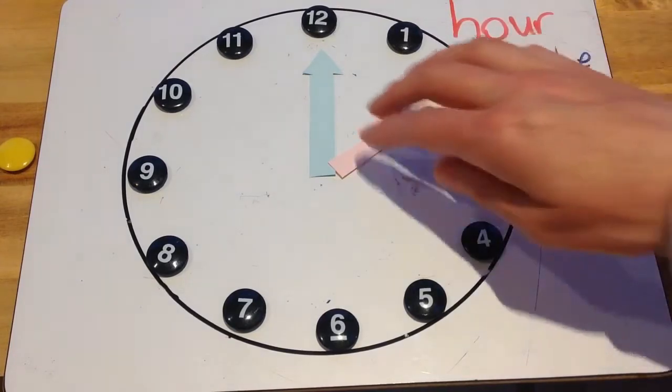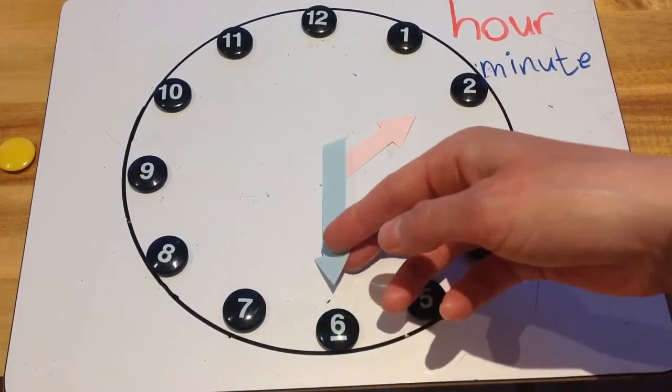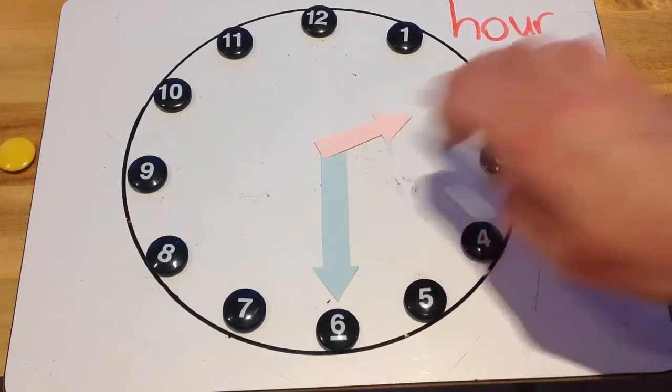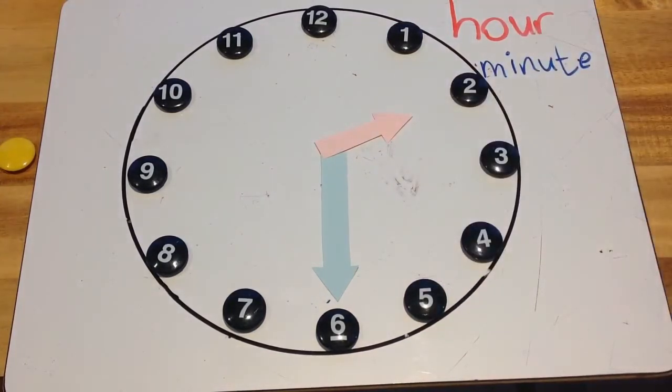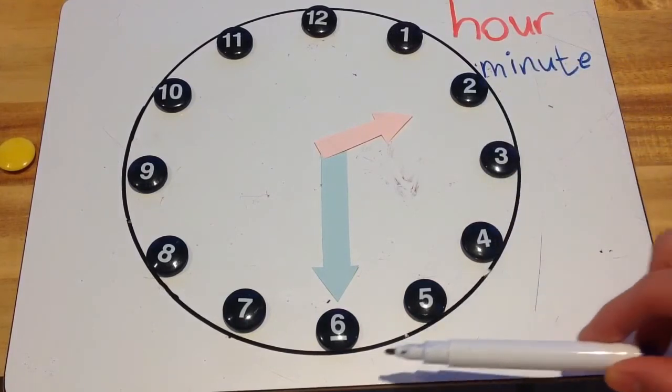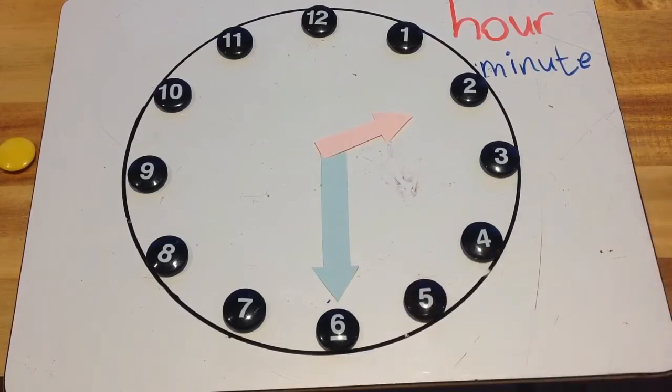Now, if that blue hand moved halfway around the clock, so it's pointing to the 6, then it's gone halfway around the clock. You see, it's gone all the way from 12, all the way down here, all the way to the 6. That's gone halfway around the clock, and that's called half past the hour.